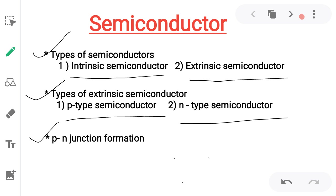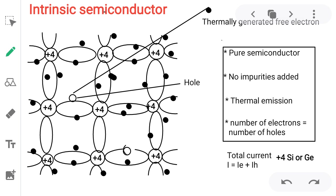Today we discuss types of semiconductor — how this classification takes place as intrinsic and extrinsic. This intrinsic and extrinsic classification is on the basis of impurities. If impurity is added, it is one type; if no impurity is added, it is another type. Classification of extrinsic semiconductor is on the basis of type of impurity — pentavalent and trivalent. Third point: PN junction formation.